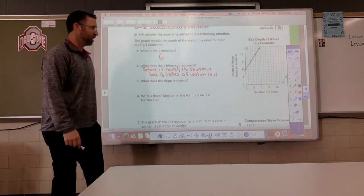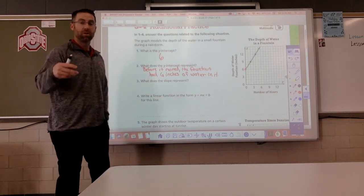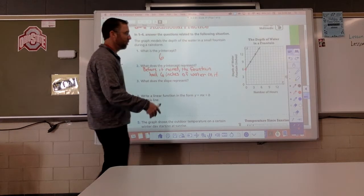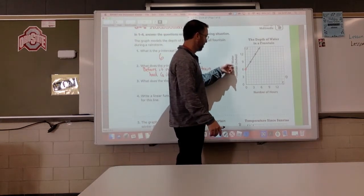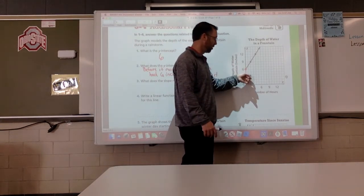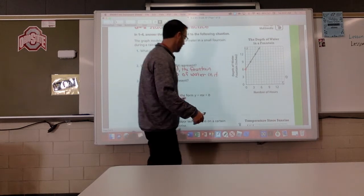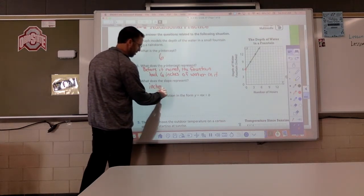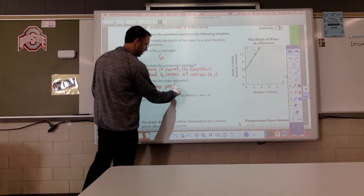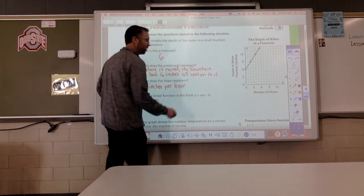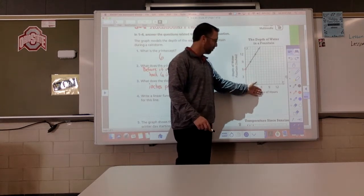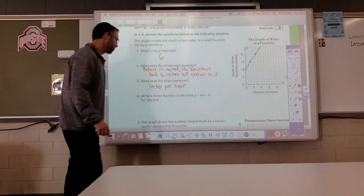What does the slope represent? Well, slope is a unit rate. It's how many inches of water, the depth of the fountain per hour. How many inches per hour? Because we are comparing these two variables together. Y variable compared to the x variable, so inches per hour.